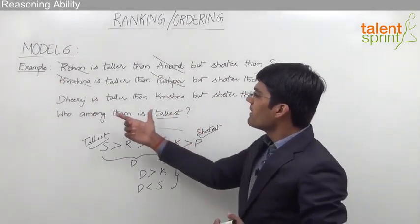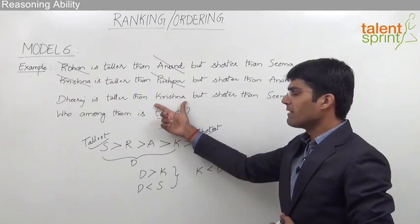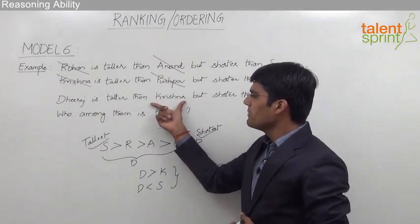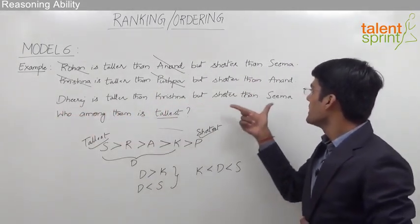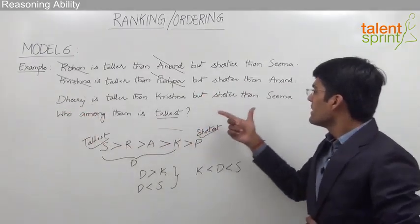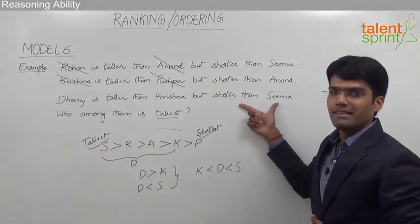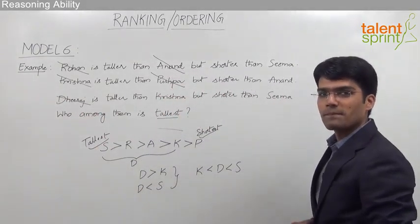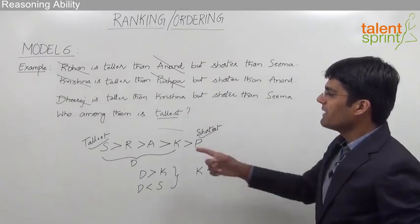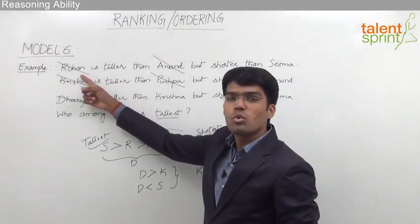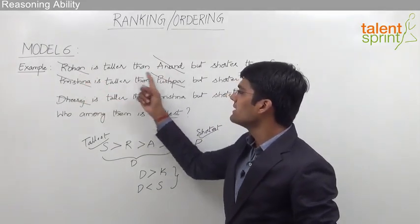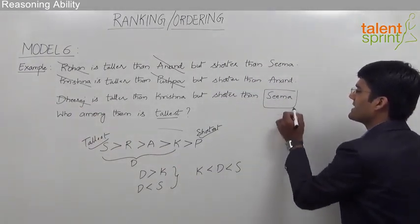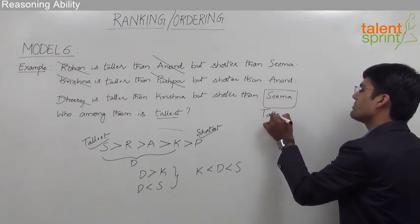From the last statement, Dheeraj is taller than Krishna but shorter than Sima. Since Krishna has already been eliminated, we directly compare Dheeraj with Sima. Dheeraj is shorter than Sima, so Dheeraj cannot be the tallest person and is eliminated. From the six persons, we have eliminated five — Rohan, Anand, Krishna, Pushpa, and Dheeraj — leaving only Sima. Therefore, Sima is the tallest person in the group.